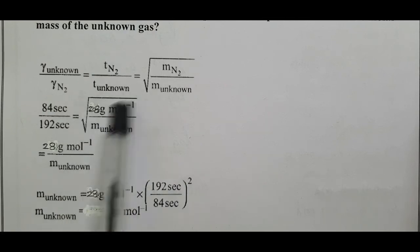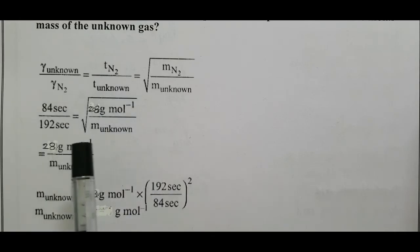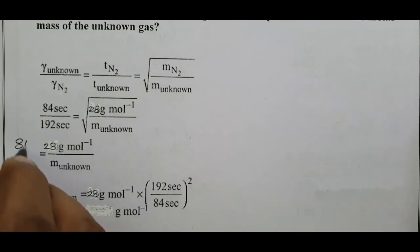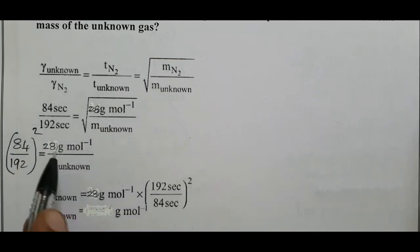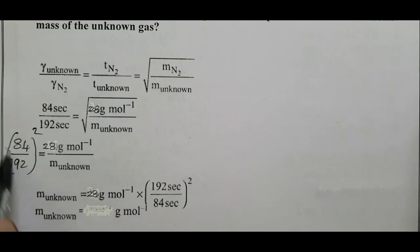To cancel the root on the right hand side, we have to square the left hand side value. So that means 84 seconds divided by 192 squared equals 28 divided by molar mass of unknown. Or molar mass of unknown equals, when you bring this value to the right hand side, 192 by 84 squared into 28.